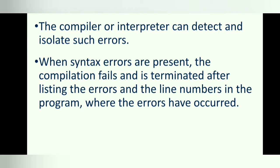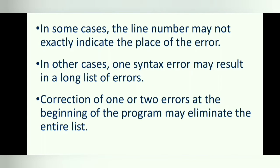When syntax errors are present, the compilation fails and is terminated after listing the errors and the line numbers in the program where the errors have occurred. For example, in Python, the erroneous line is displayed by the parser which also indicates where the fault was first found in the line with a small arrow. In some cases, the line number may not exactly indicate the place of the error. In other cases, one syntax error may result in a long list of errors. Correction of one or two errors at the beginning of the program may eliminate the entire list.